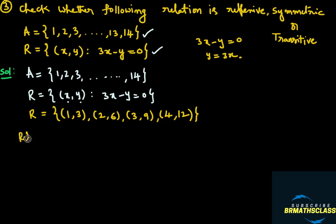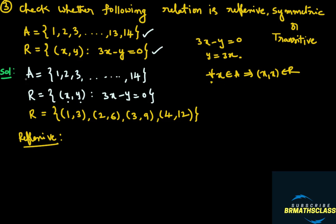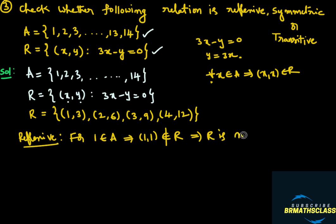Now we need to check if this relation is reflexive. For reflexive property: for every x in set A, the ordered pair (x, x) must be in R. Taking the first element, 1 is in set A, but the ordered pair (1, 1) is not in R. So we say that R is not reflexive.